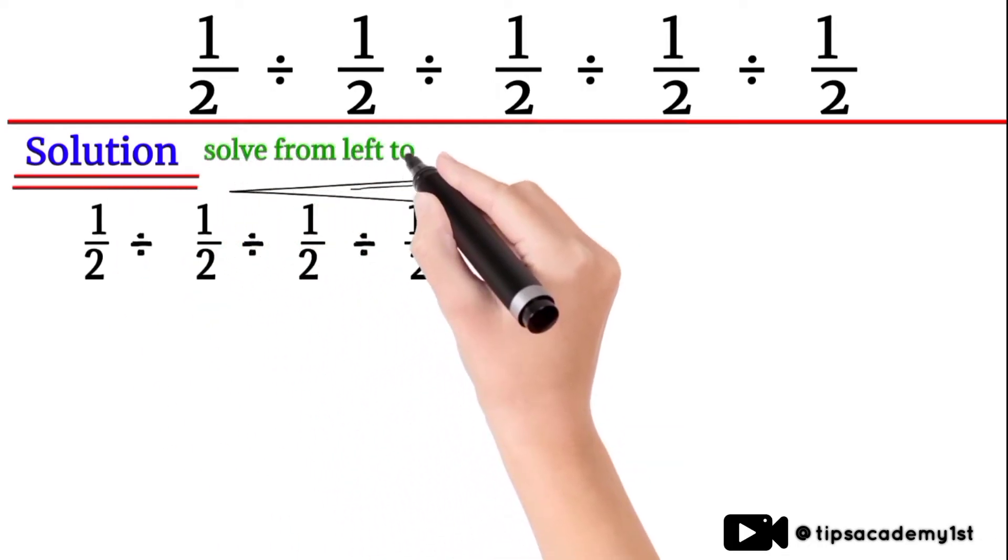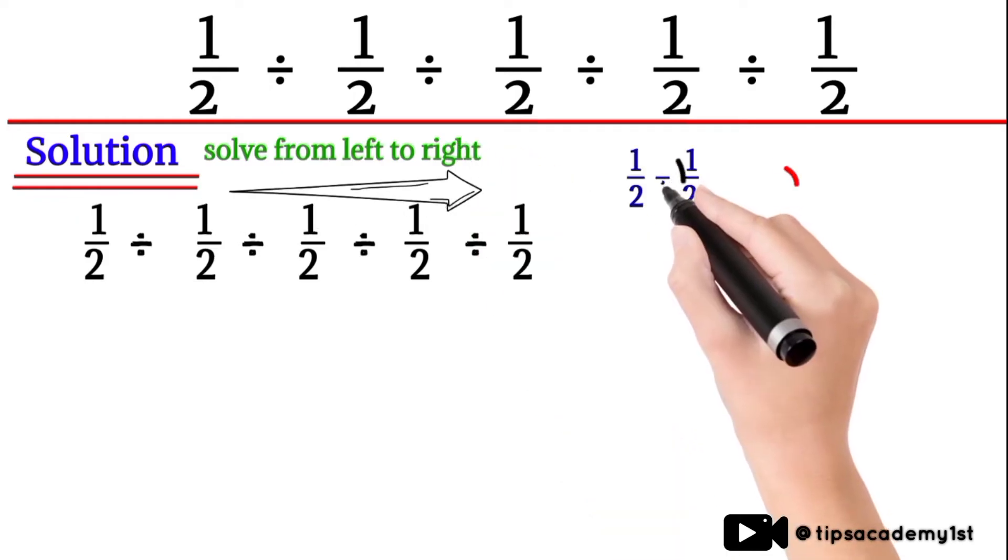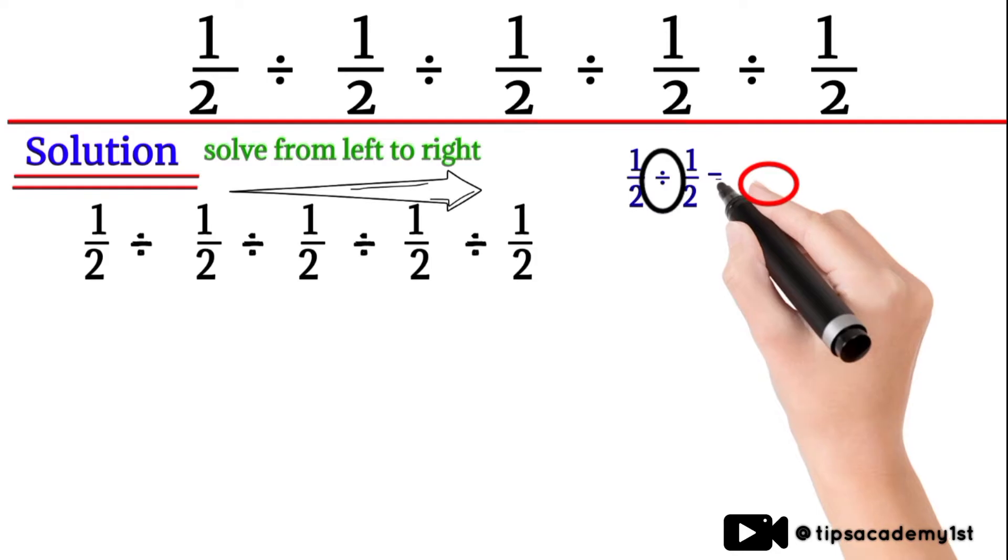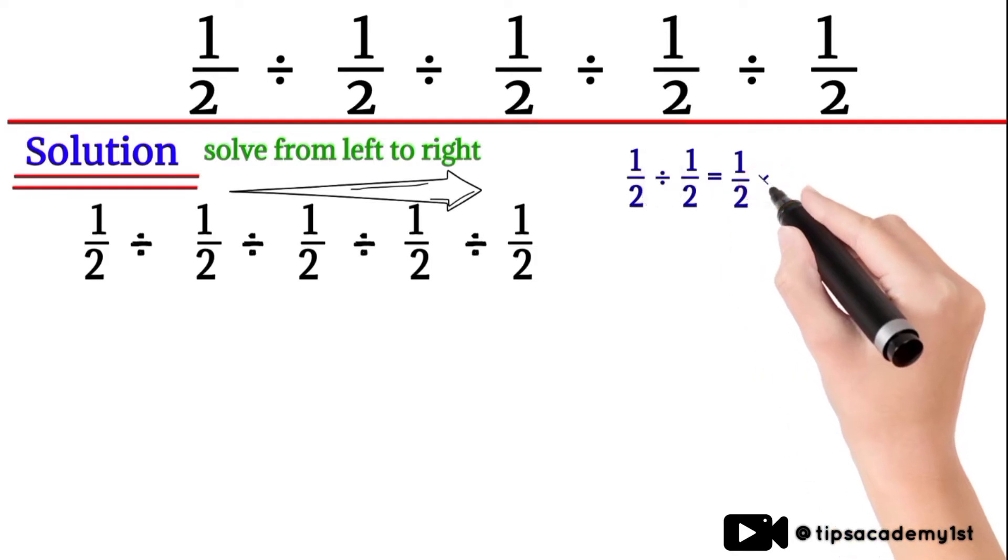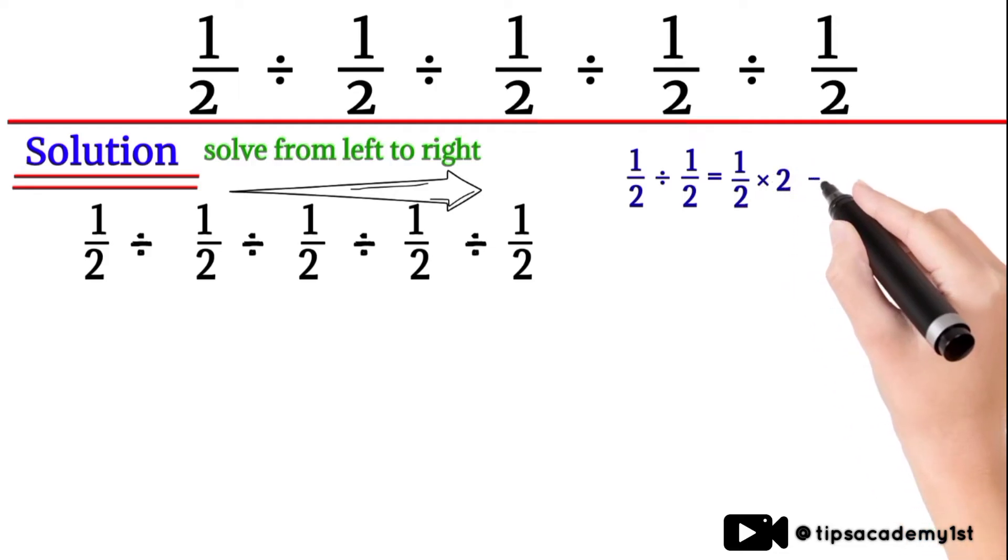First of all, observe first two terms. Here we will change this division into multiplication, then we will take reciprocal of next term. Then here 2 will be cancelled out with this 2, so its answer will be equal to 1.